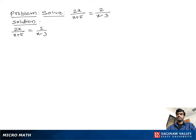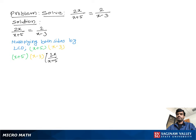To solve this problem, we multiply both sides by the lowest common denominator (LCD), which is x plus 5 times x minus 3. Then x plus 5 cancels out, leaving x minus 3 times 2x on the left. Then x minus 3 cancels out, leaving x plus 5 times 2 on the right.